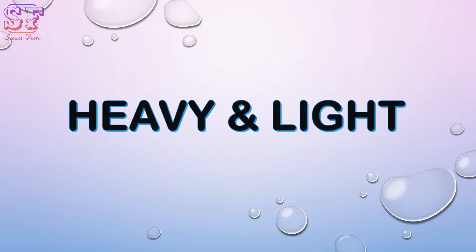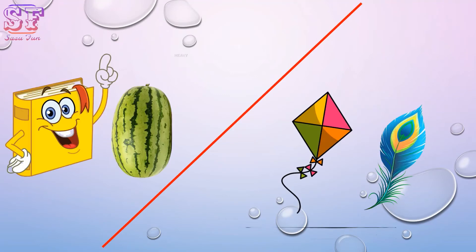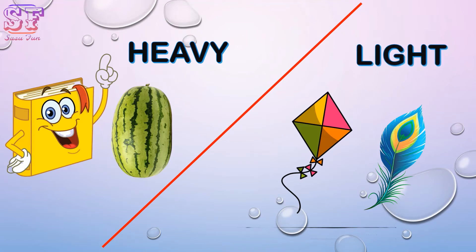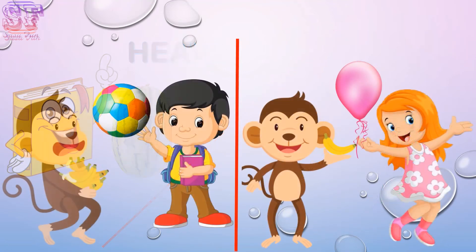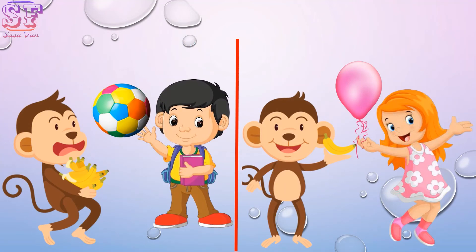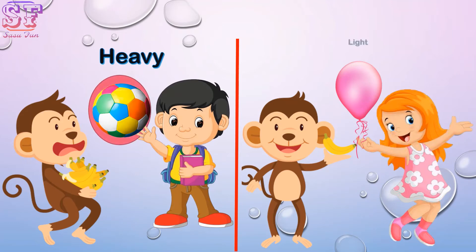Our fifth concept is heavy and light. Heavy — we are heavy. Light — we are light in weight. Book and watermelon are heavy; kite and peacock feather are light. Can you guess which one is heavy and which one is light? Yes! This is heavy in weight and this is light in weight.